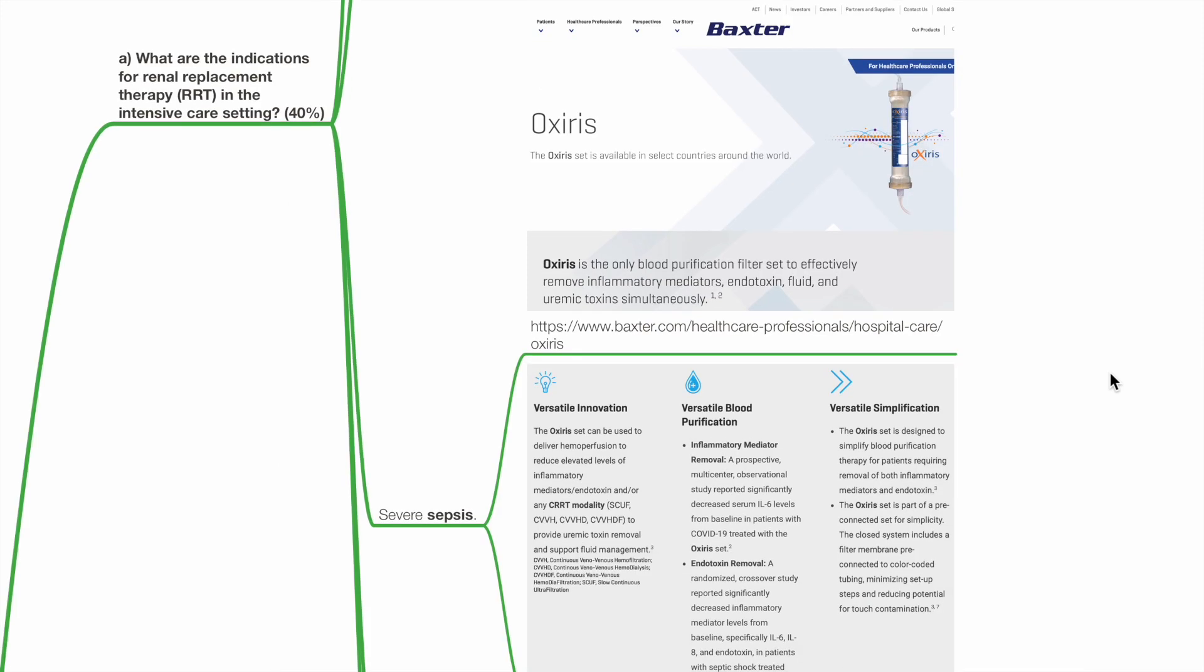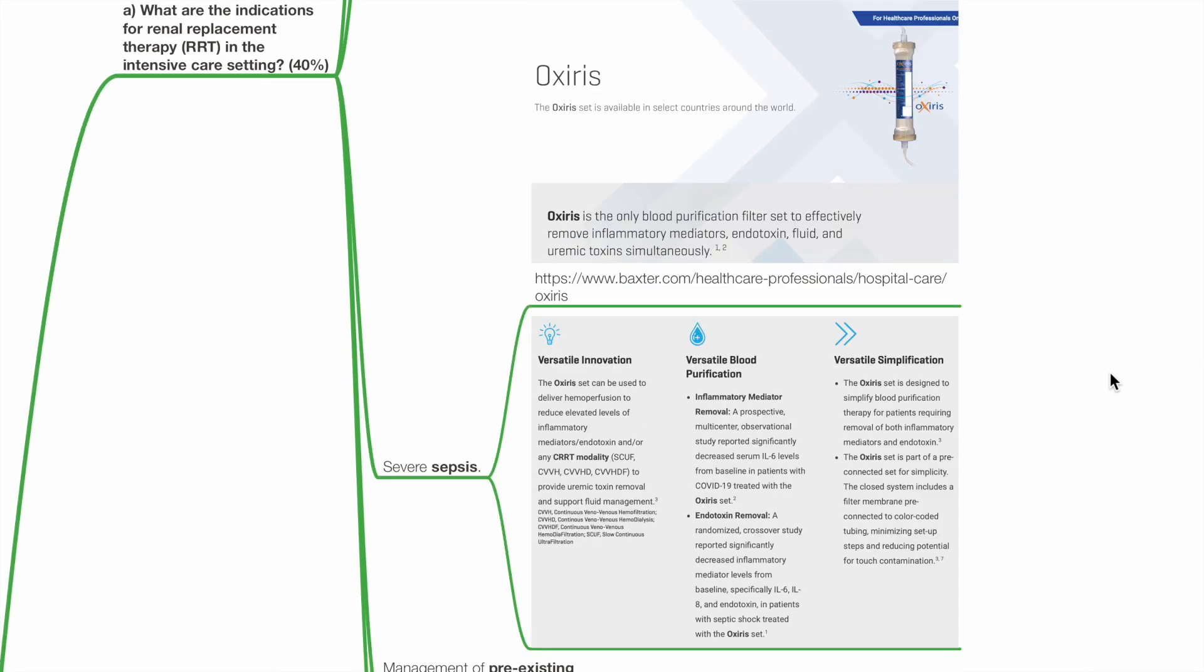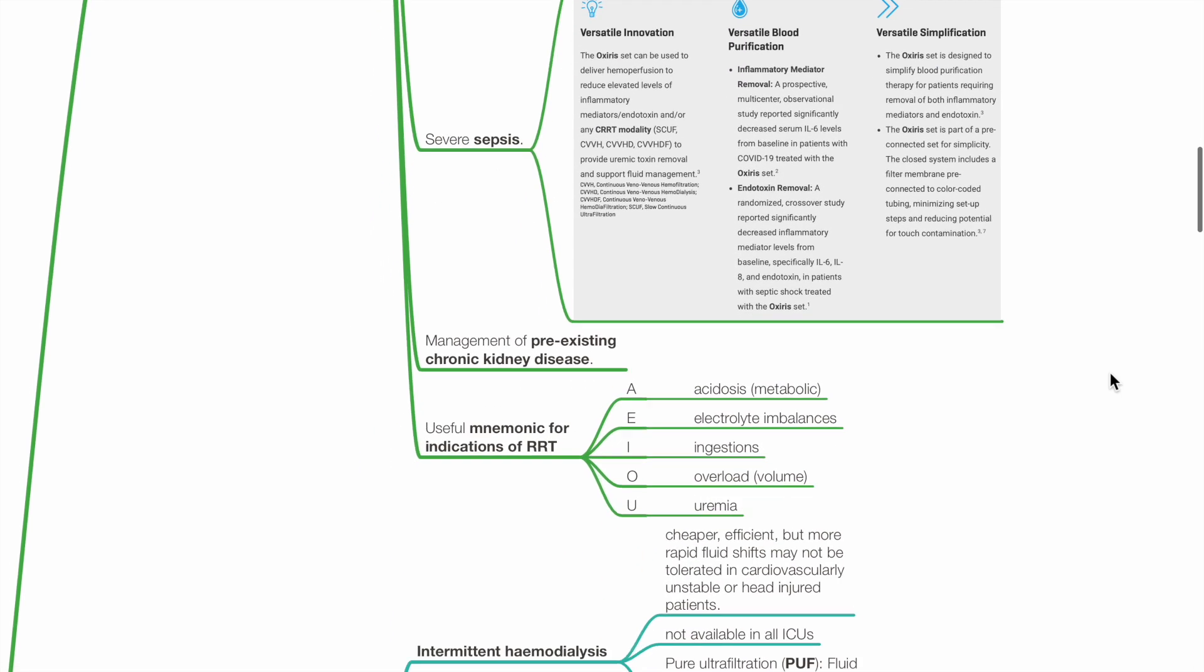Severe sepsis is an indication for RRT. Special blood purification filters such as Cytosorb are able to remove inflammatory mediators, endotoxin, fluid and uremic toxins simultaneously. RRT is also indicated in the management of pre-existing chronic kidney disease.